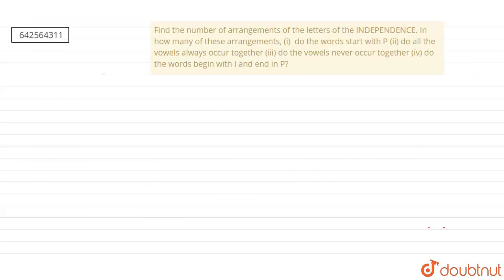So today our question is: find the number of arrangements of the letters of the word INDEPENDENT. We have to find in how many of these arrangements do all the vowels only occur together, do the vowels never occur together, and do the words begin with I and end with P.